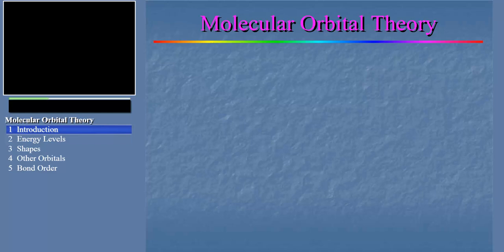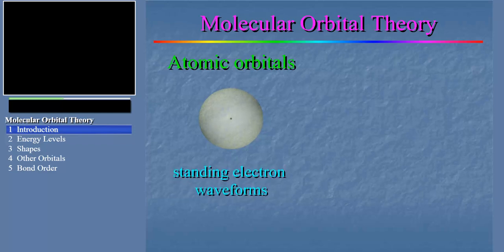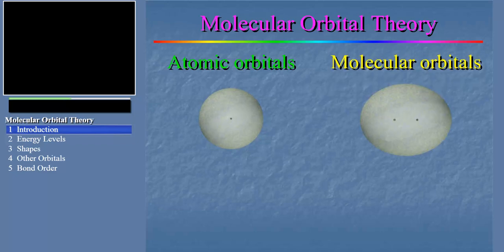Molecular orbitals are best understood by comparing them to atomic orbitals with which you're already familiar. Atomic orbitals are standing waveforms around a single nucleus. Well, molecular orbitals are also standing electron waveforms, but this time not around a single atomic nucleus, but around all of the atomic nuclei that make up the molecule.